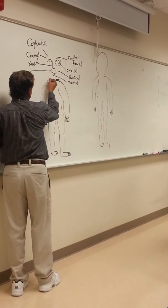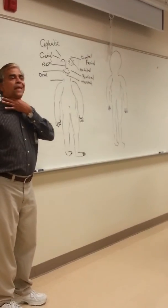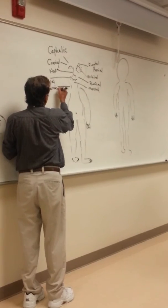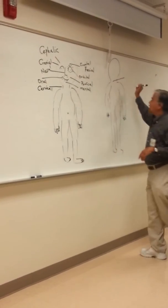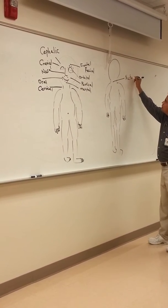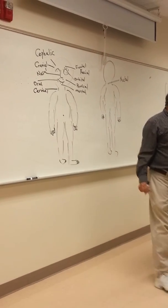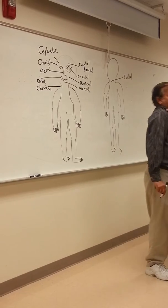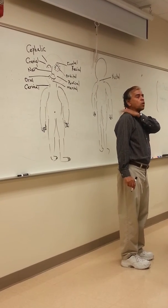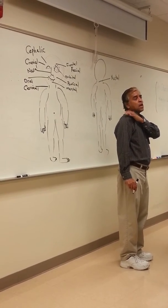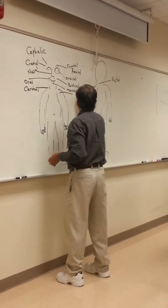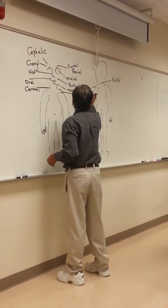Now we are down to the neck. The neck is cervical. But if you look at the posterior view, the back of the neck, we call that nuchal. Then the shoulder — there is a projection in the bone called the acromion process, so we call this the acromial region.